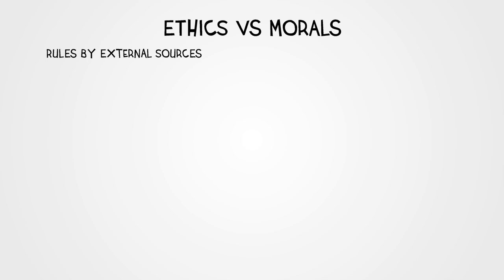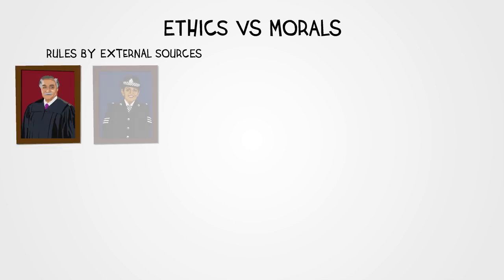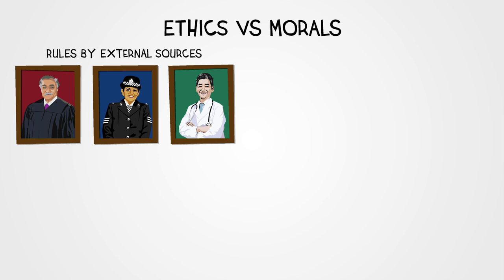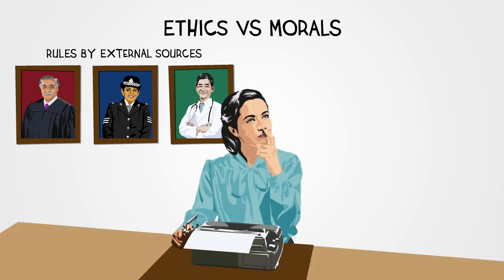A concrete example of ethics are codes of conduct in workplaces. Lawyers, policemen and doctors all have to follow an ethical code laid down by their profession, regardless of their own feelings or preferences. In a specific communication setting, we can say that the Society of Professional Journalists Code of Ethics is a very good example. In this code, several principles of ethical journalism are included, with instructions on how to behave as an objective, transparent and reliable journalist.